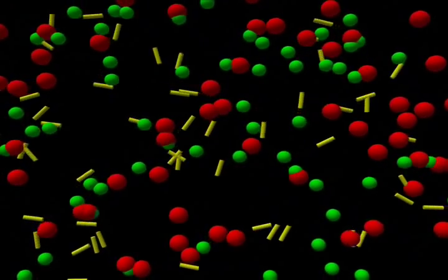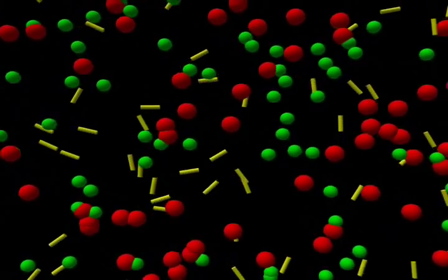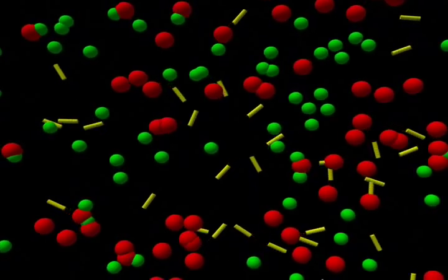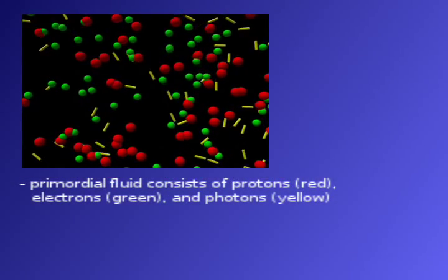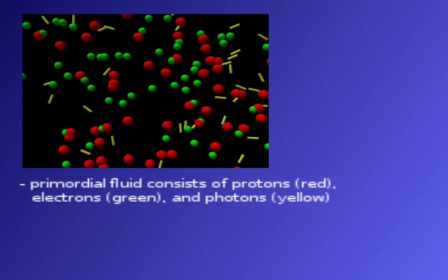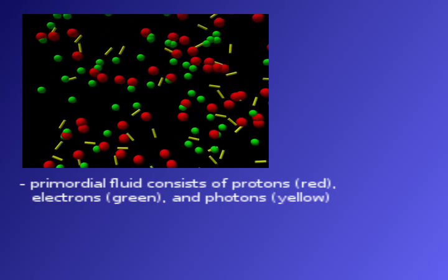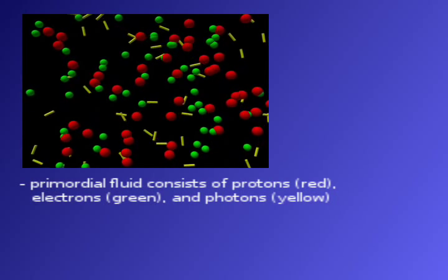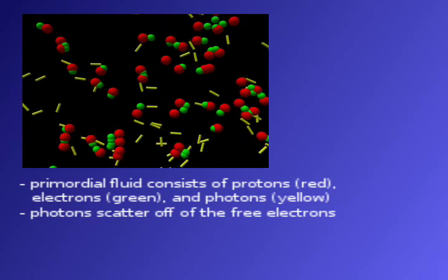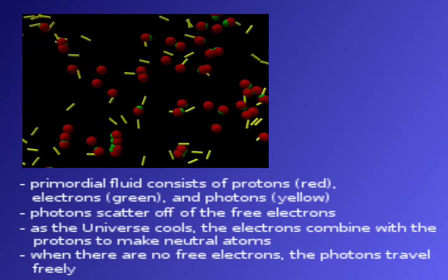The early universe looked very different from the universe of today. Instead of vast regions of empty space, the entire universe was filled with a hot, dense mess we call the primordial fluid. The primordial fluid was made up of protons, shown here in red, electrons shown in green, and light. But 300,000 years after the Big Bang, the universe was so hot that the electrons and protons could not stay together without being torn apart by a collision. During this time, light would hit free electrons and change course, a process known as scattering. As the universe expanded, it cooled, and the electrons joined the protons to make neutral atoms. With the electrons captured, the light could travel unimpeded. The universe had become transparent.